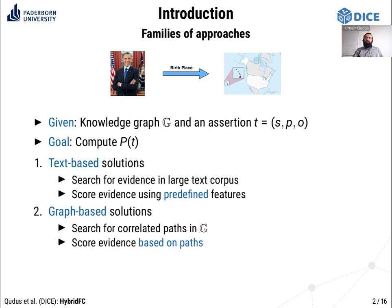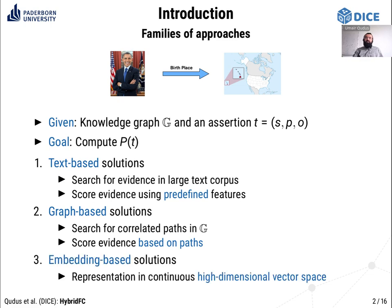The second family is graph-based approaches. They search for correlated paths in the knowledge graph itself and score evidence based on paths between subject and object entities. The third family is embedding-based approaches. They represent the whole knowledge graph in the form of a high-dimensional vector space, apply the predicate vector on the subject vector, and if the resultant vector is close to the object vector, the assertion is true; otherwise false. Multiple variants of these embedding-based approaches have been proposed. I will now talk about the limitations of these families and then discuss our hybrid solution, experiments, results, and conclusion.